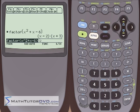And it's going to spit out x minus 2 times x plus 3, which is what you would get if you did this by hand.